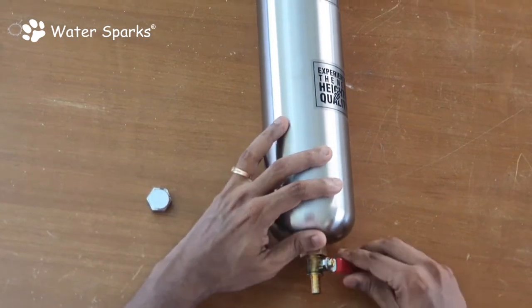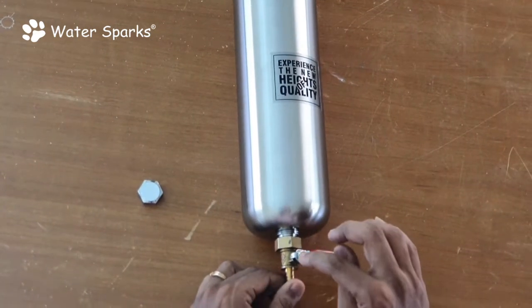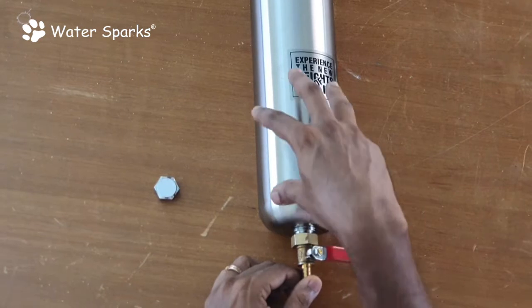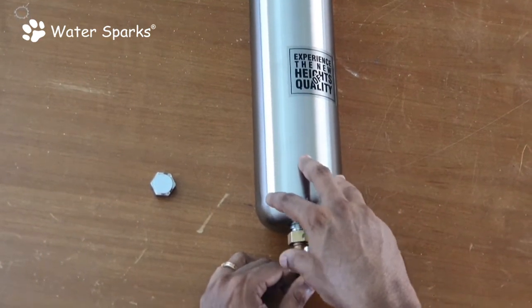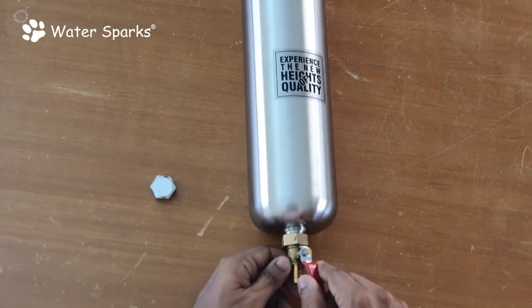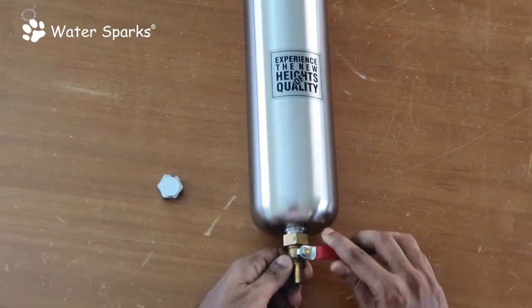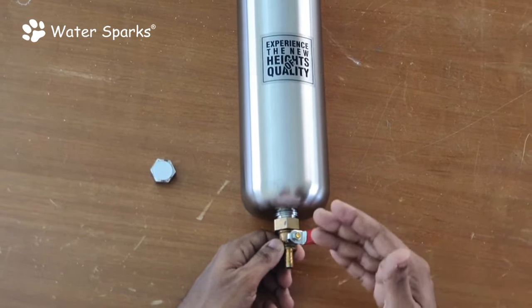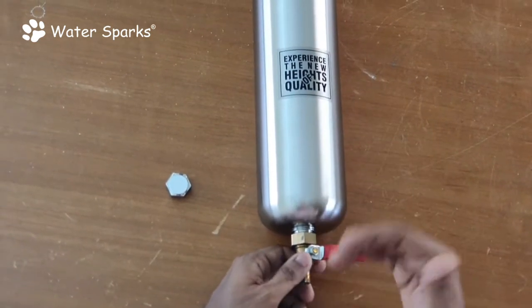What the flush valve does is flush out whatever impurities are collected on the surface of the filter when you open it. This means you don't require to remove the filter from the housing to clean it.